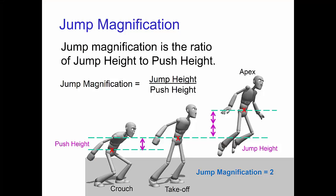Now let's see how to do that while still keeping them believable. Exceptional jumps have a very large jump height. The ratio of the jump height to push height is called jump magnification.